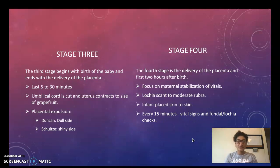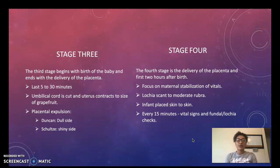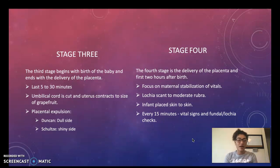Stage four begins at delivery of the placenta and covers the first two hours immediately following birth. In this stage we want to focus on stabilizing the mother and her vitals. We want to assess lochia, which should be scant to moderate rubra. The infant should be placed skin to skin, and every 15 minutes the vital signs, fundus, and lochia should be checked.